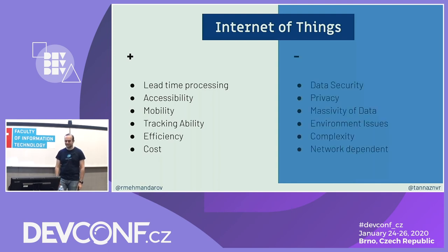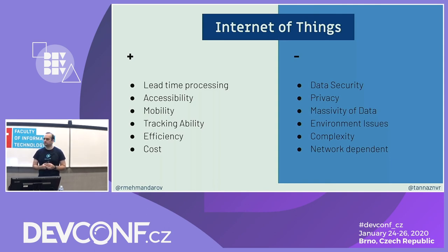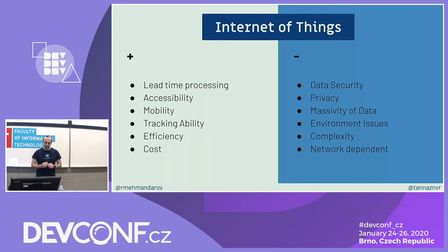Not everything is good, though. Security can be a challenge because we now have many more devices that want to communicate with each other — more software and hardware that can have bugs, making things more complex. Privacy can also be an issue because in most cases we send raw data over the network to servers, and both servers and network can leak data. Environment can be an issue too — we're making so many devices we need to think about how to recycle them. And these devices are dependent on internet; if we don't have connectivity, we can't use them.